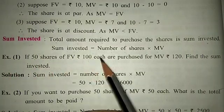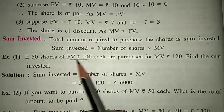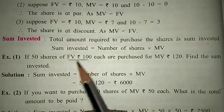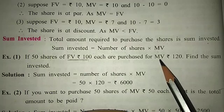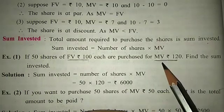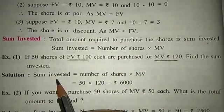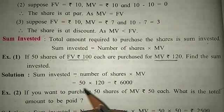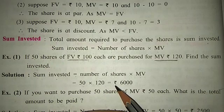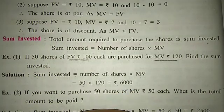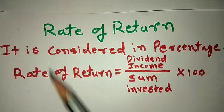For example: 50 shares of face value Rs. 100 each are purchased at market value Rs. 120. The face value printed on the share certificate was Rs. 100, but the company has a good reputation so the share sells at Rs. 120 in the market. Sum Invested = Number of Shares × Market Value = 50 × 120 = Rs. 6000. That is the cost of investment.